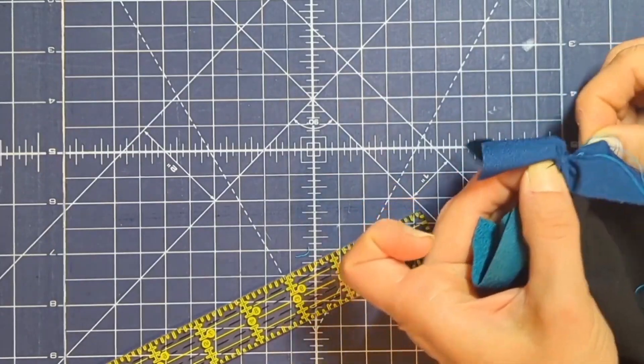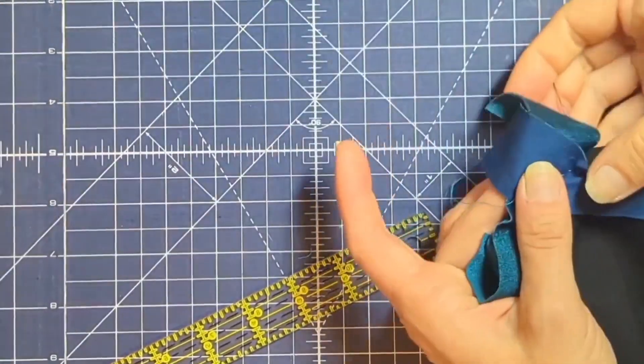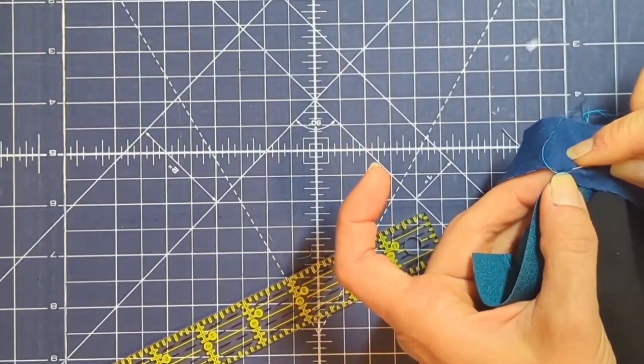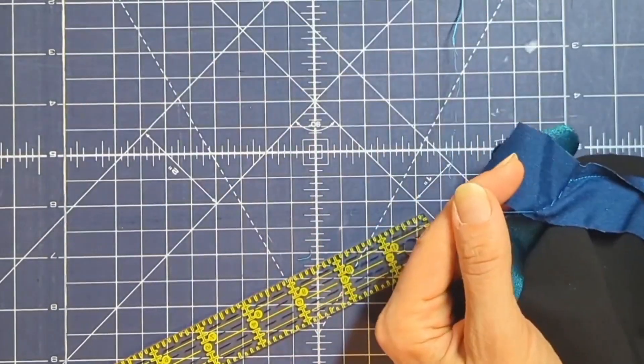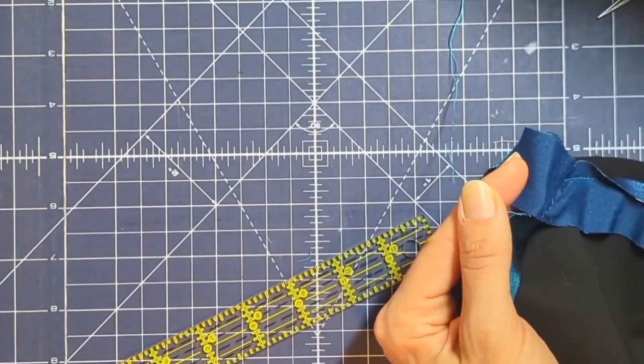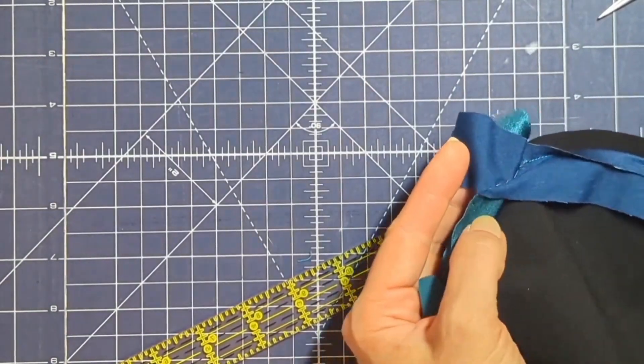Now some people will pin this or clip it and that's fine too, or some people will just hold it in place. I like to baste it because I can leave the basting stitches in while I sew my seam, and I find that it doesn't move around on me as much. So for the few seconds it takes to throw in the basting stitch, I just throw in a quick basting stitch.